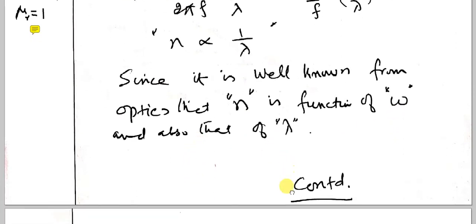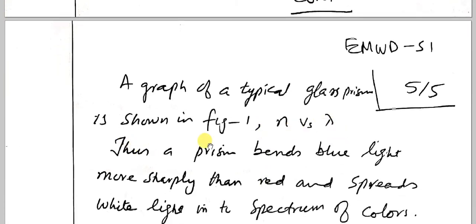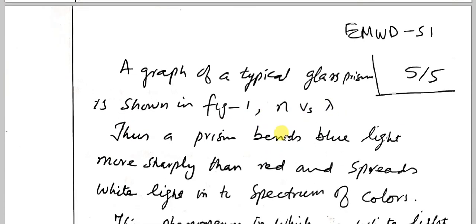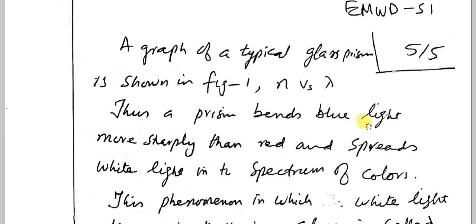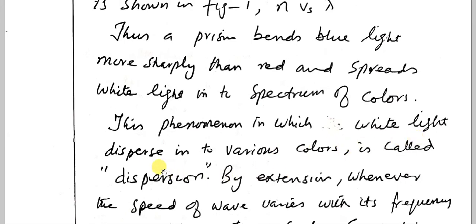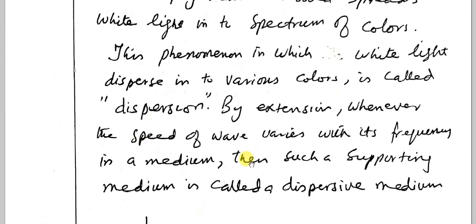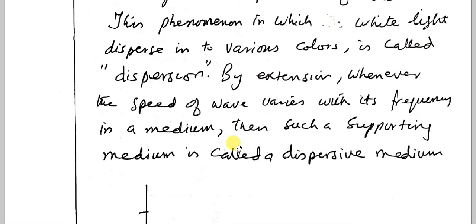A graph of crown glass prism is shown in figure one below. In the n versus lambda graph is plotted, a prism bends blue light more sharply than red and spreads white light into the spectrum of colors. This phenomenon in which white light disperses into various colors is called dispersion. By extension, whenever the speed of the wave varies with its frequency in a medium, such supporting medium is called a dispersal medium.